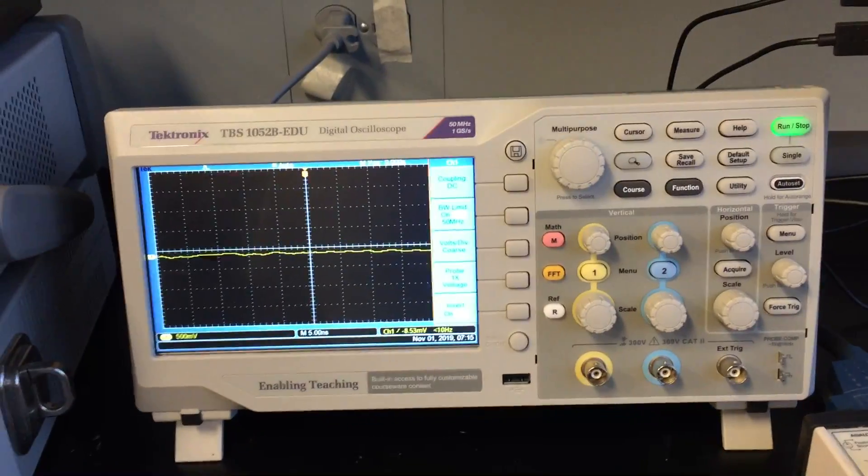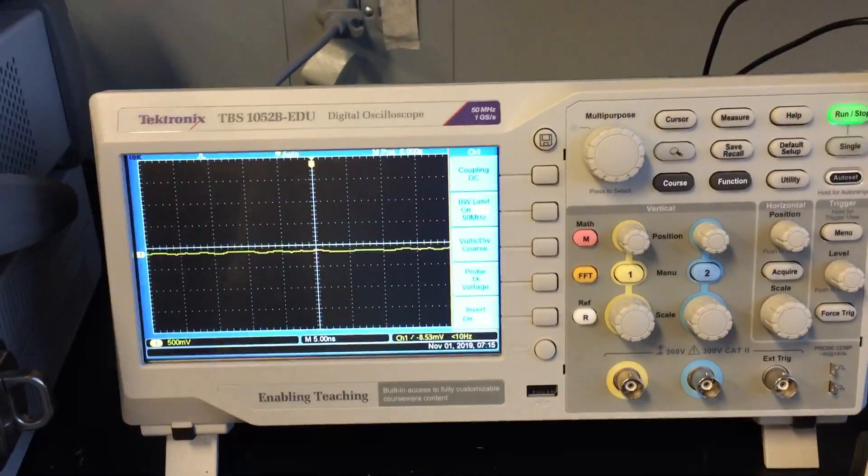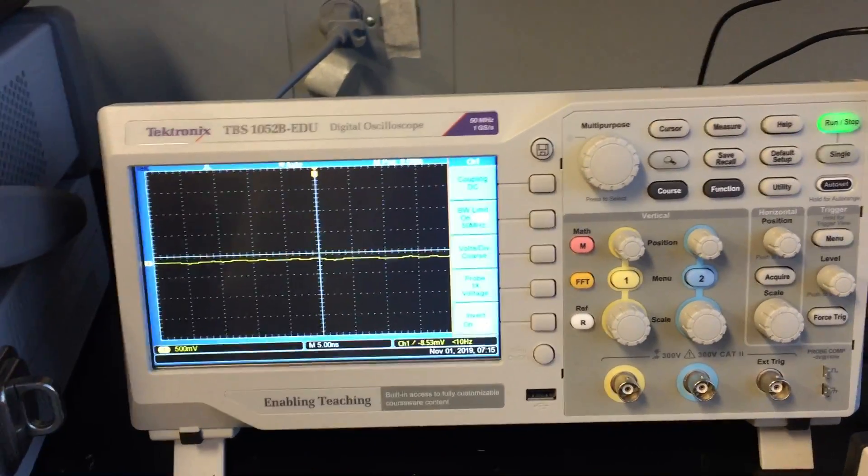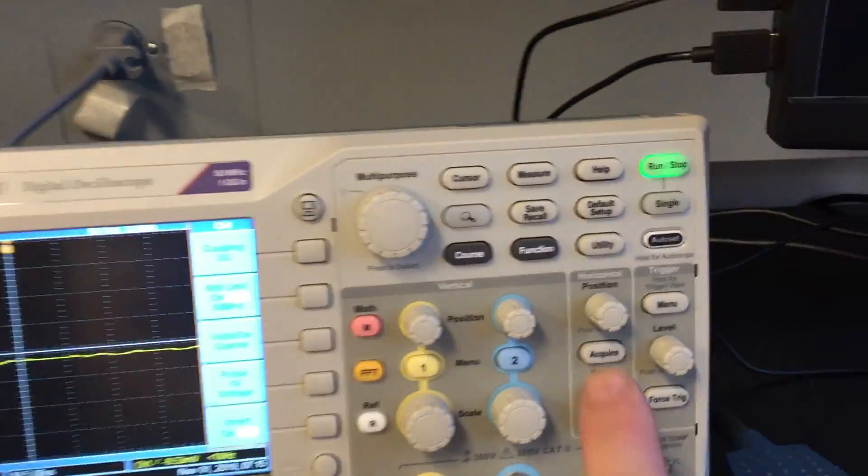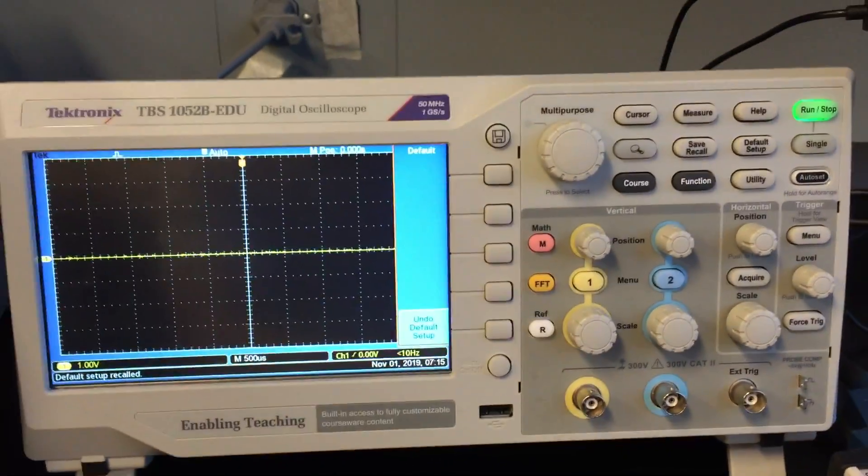So I turn my scope on, and I'm looking at it. I can see a trace, everything's good. So the thing that I often do, because you just don't really know what someone was using the scope for beforehand, is hit the default setup button. It's up here. If I hit that button, it brings the scope back to the factory defaults.